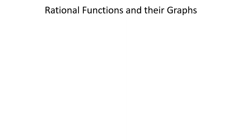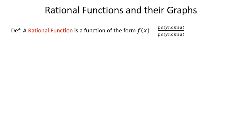In my previous handful of videos, I've been discussing polynomials, polynomial functions, polynomial equations, polynomial graphs, and so on. The next logical place to go from polynomials is rational functions — it's a different type of function. A rational function is not a polynomial, but if we look at the definition, a rational function is a function of the form polynomial divided by polynomial.